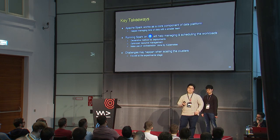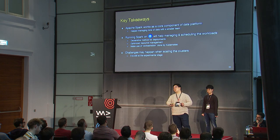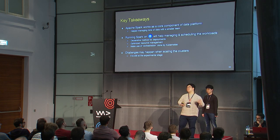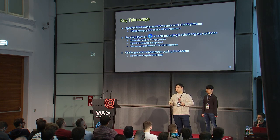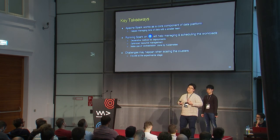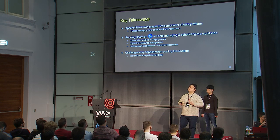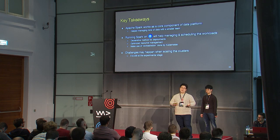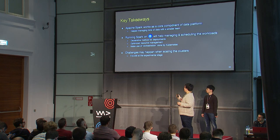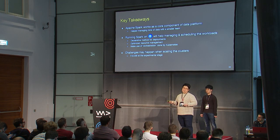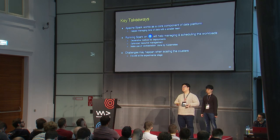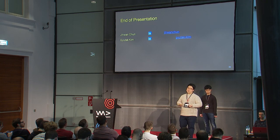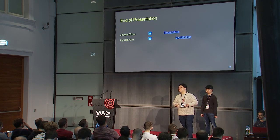To summarize our key takeaways: Spark works as a core component of our data platform. Because of its distributed computing functionality, we can process terabytes or even petabytes of data with a small team. But issues arose when running thousands of Spark clusters simultaneously — that's where Kubernetes came in. Leveraging Kubernetes helped us solve problems of resilience and scalability through declarative deployments, resource sharing, and more. However, challenges remain when using Spark on Kubernetes since it is still in an experimental stage. We hope this talk gives you ideas for taking your data infrastructure to the next level. Thank you.